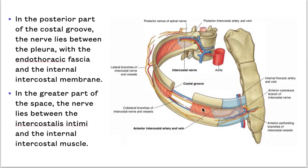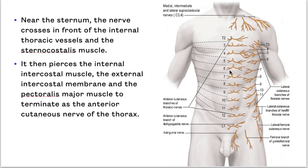In the posterior part of the costal groove, the nerve lies between the pleura with the endothoracic fascia and the internal intercostal membrane. For the greater part of the space, the nerve lies behind the intercostalis intima and the internal intercostal muscles. Near the sternum, the nerve crosses in front of the internal thoracic vessels and the sternocostalis muscle. It then pierces the internal intercostal muscle, the external intercostal membrane, and the pectoralis major muscle to terminate as the anterior cutaneous nerve of the thorax.